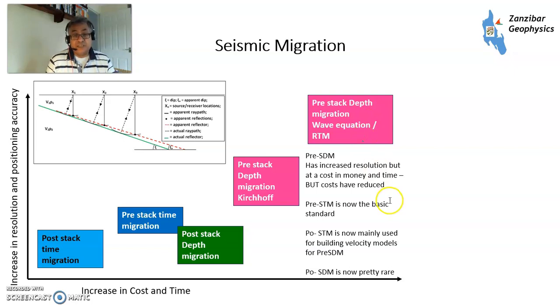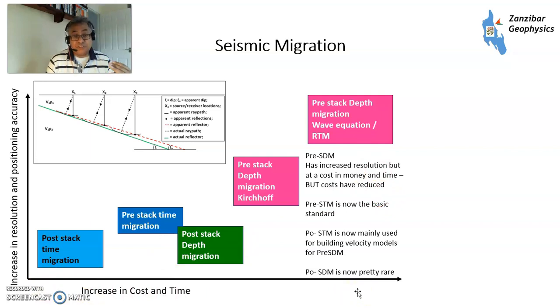Moving into pre-stack depth migration gives you the most accurate positioning. Initially, Kirchhoff algorithms were used, and later more advanced algorithms such as wave equation and RTM. The key point is that the more complicated your migration algorithm, the more it costs in terms of computer time and the longer it takes.